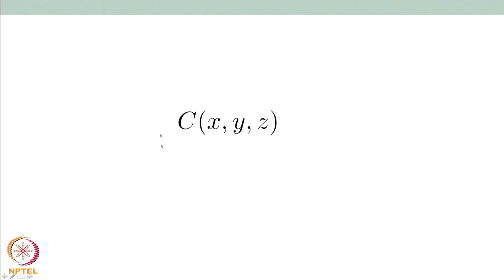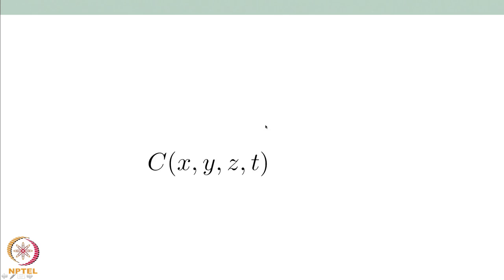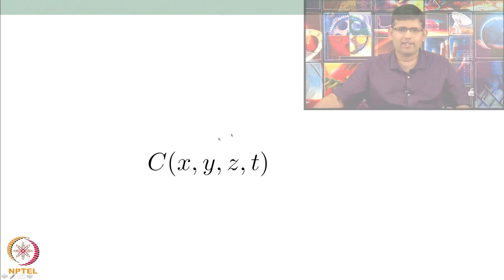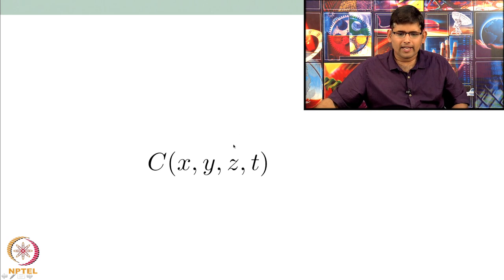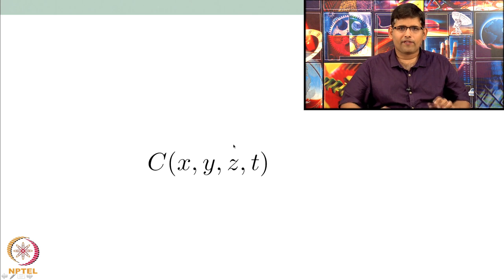Think about what the mathematical equation for a helix would be — it is some function of x, y, and z, and the double helix is a very important structure in biology. You can also think of c(x, y, z, t), which represents something flowing in 3D. These are all functions.